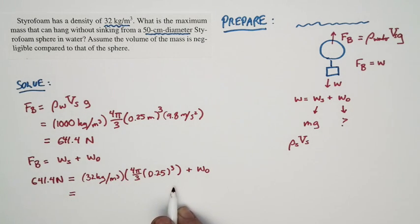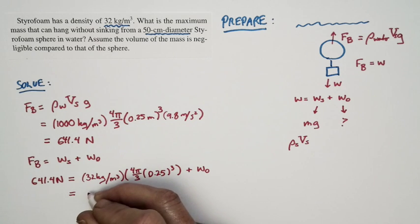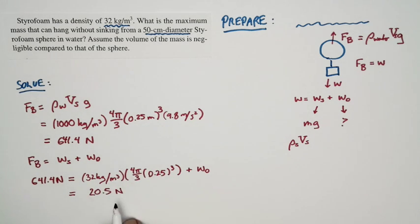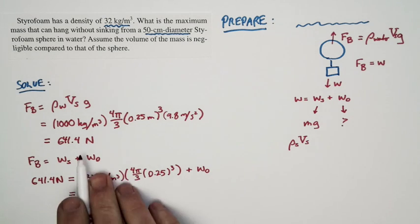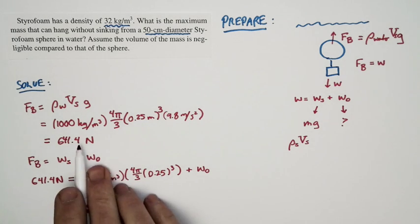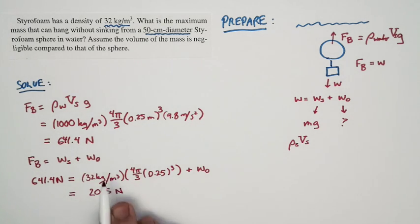Well, if I work out this expression right here, the weight of the styrofoam is 20.5 newtons. And that makes sense. That's significantly smaller than the buoyant force. This is the weight of the water that's displaced by the sphere. This is the weight of the sphere. And I expect this to be significantly lower.